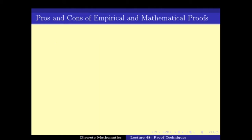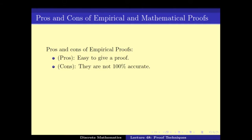The good thing of empirical proofs is that they are easy to prove, but the downside is that these proofs are not necessarily 100% accurate. For example, in this case, while n square minus n plus 41 is prime for all small values of n, but for n equals to 41 it is not true.